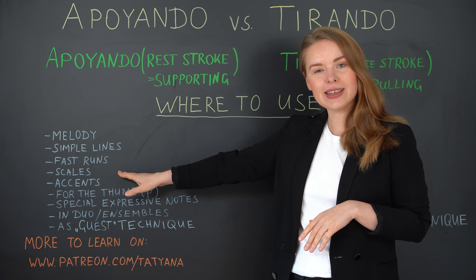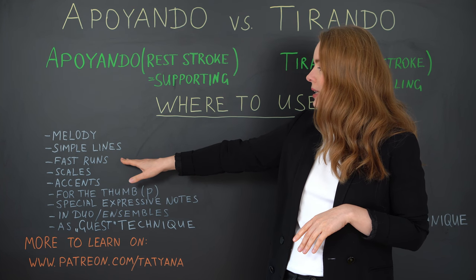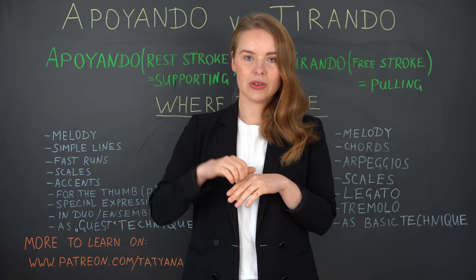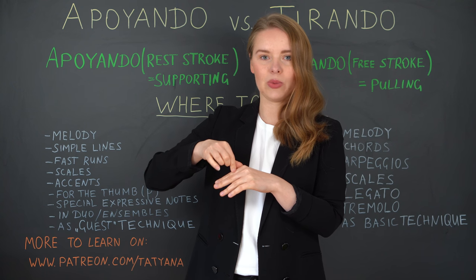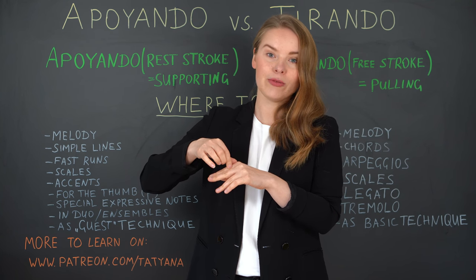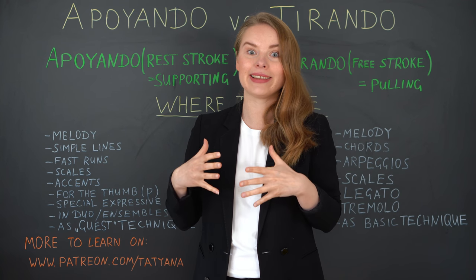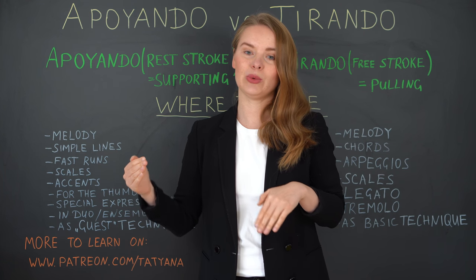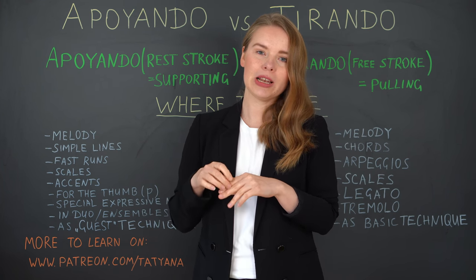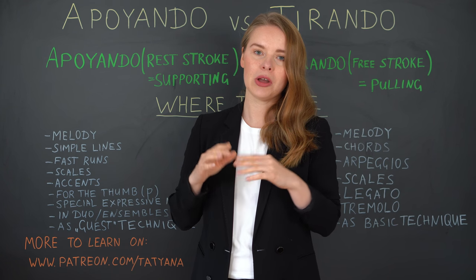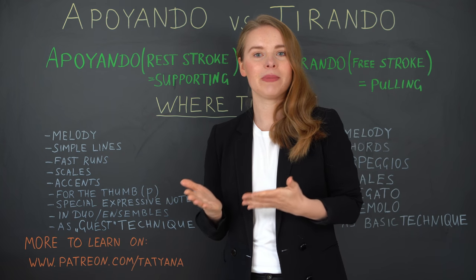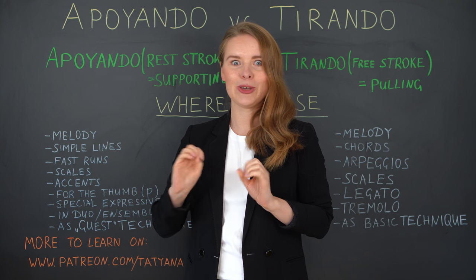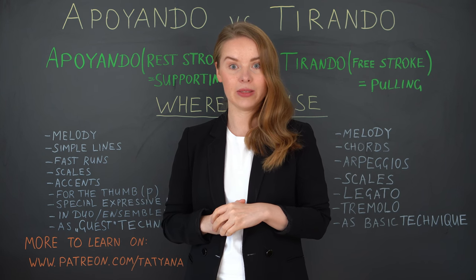Another case where apoyando is very helpful is fast runs. Playing apoyando, you can turn your hand slightly to the right, giving your fingers a shorter path. They roll faster from the string, allowing you to increase speed much more than with free stroke. Flamenco guitarists, who are famous for their quick technique, use it a lot.